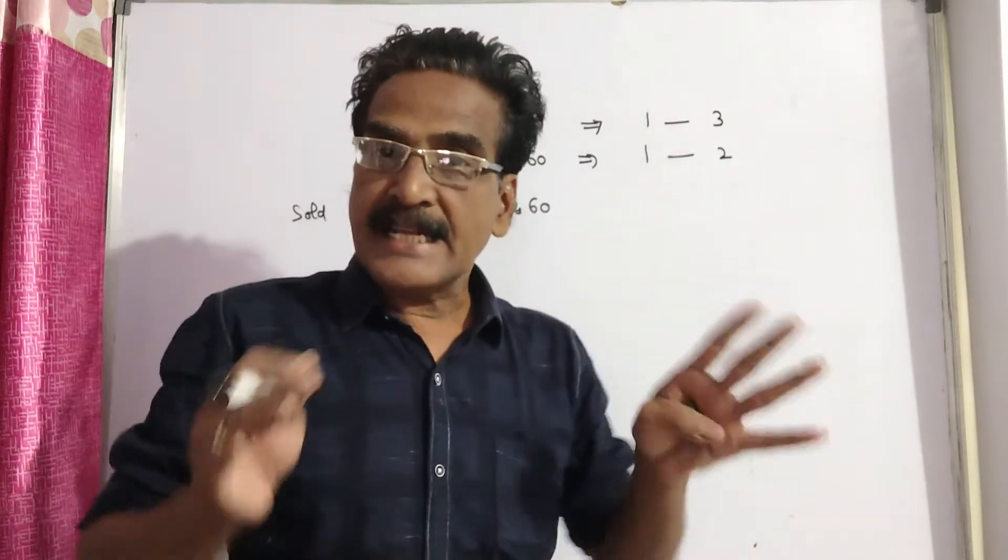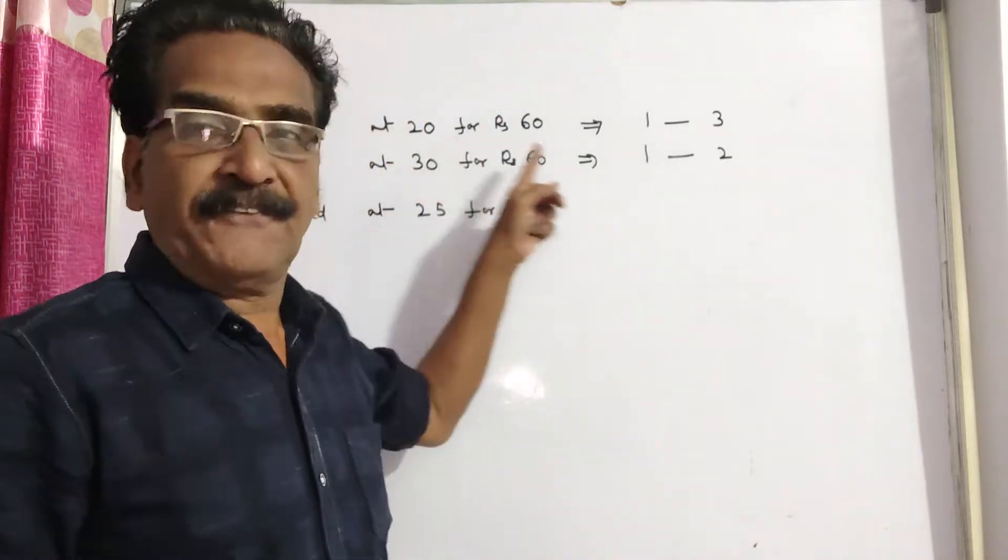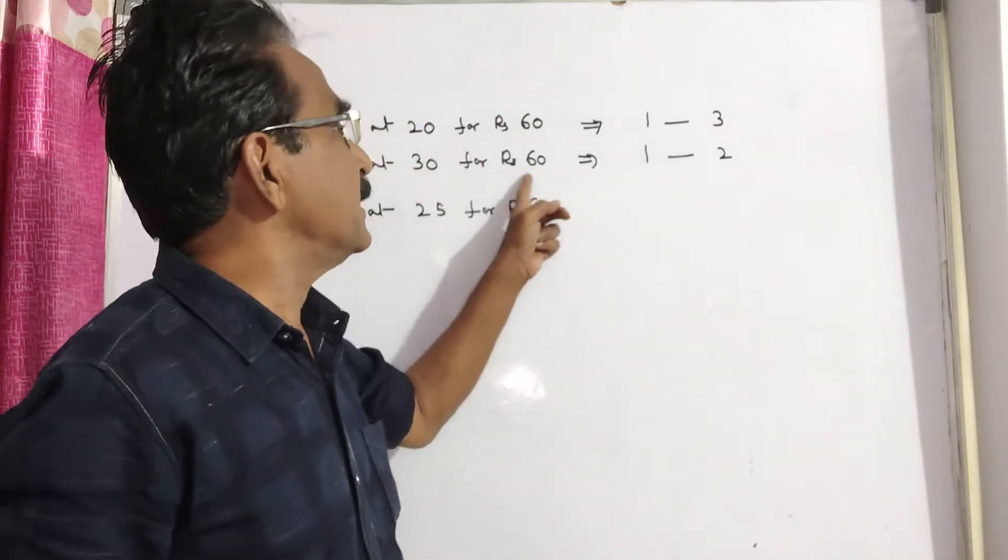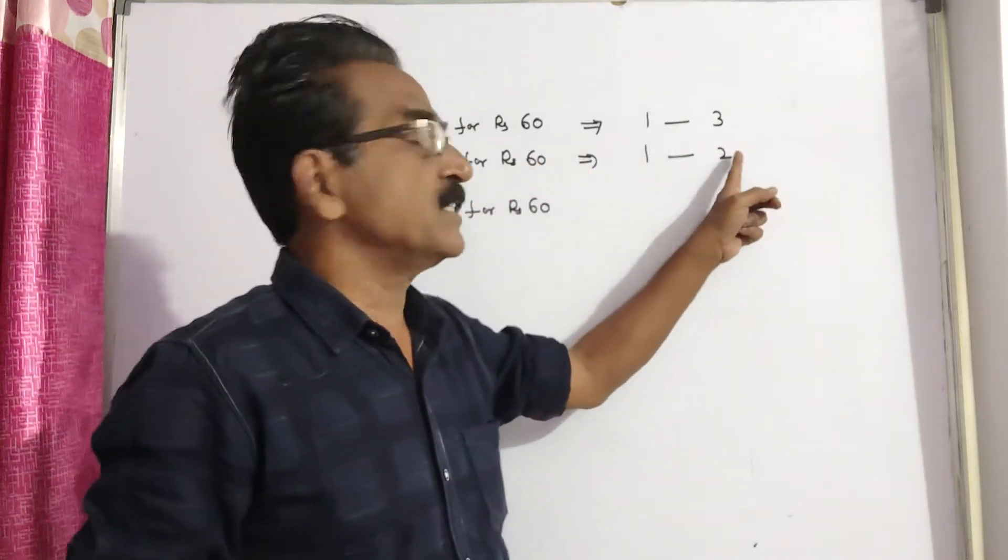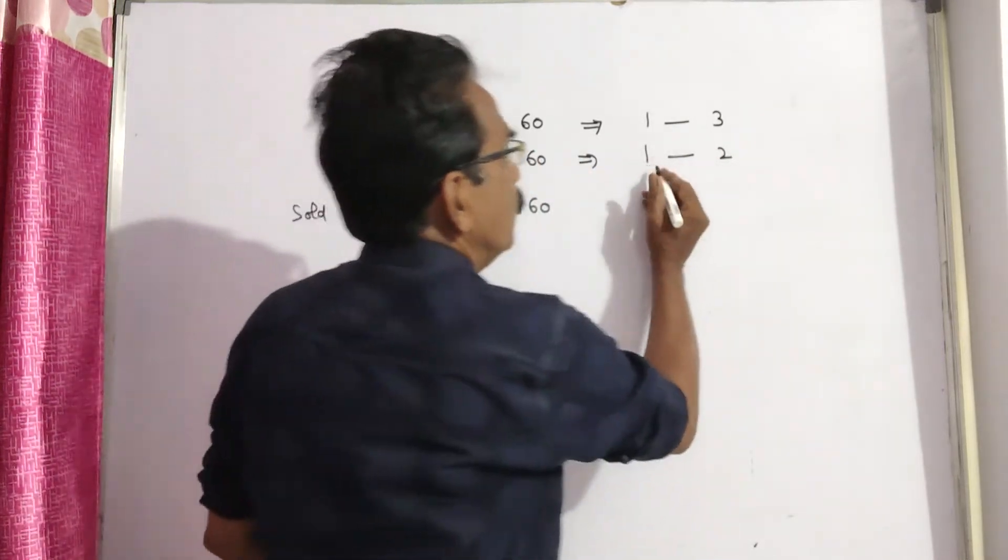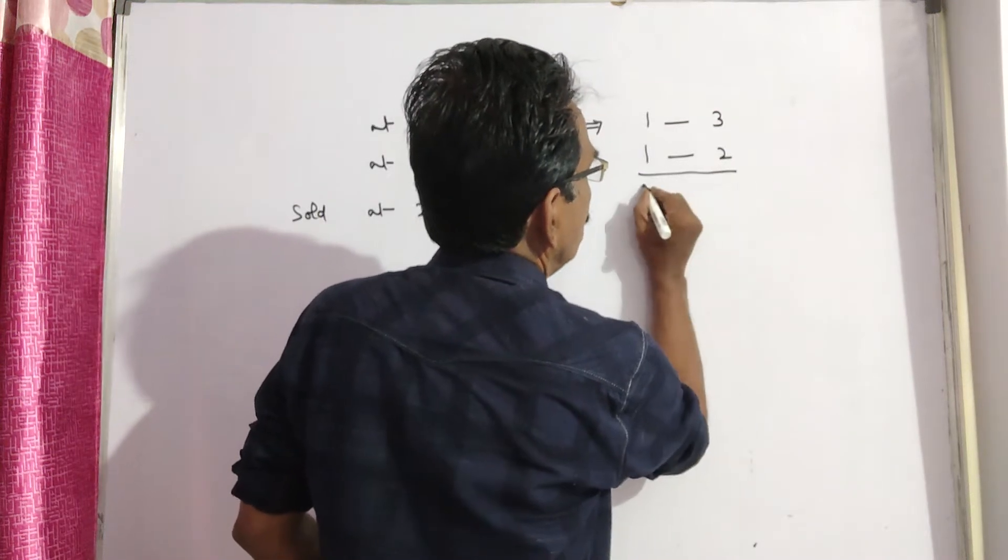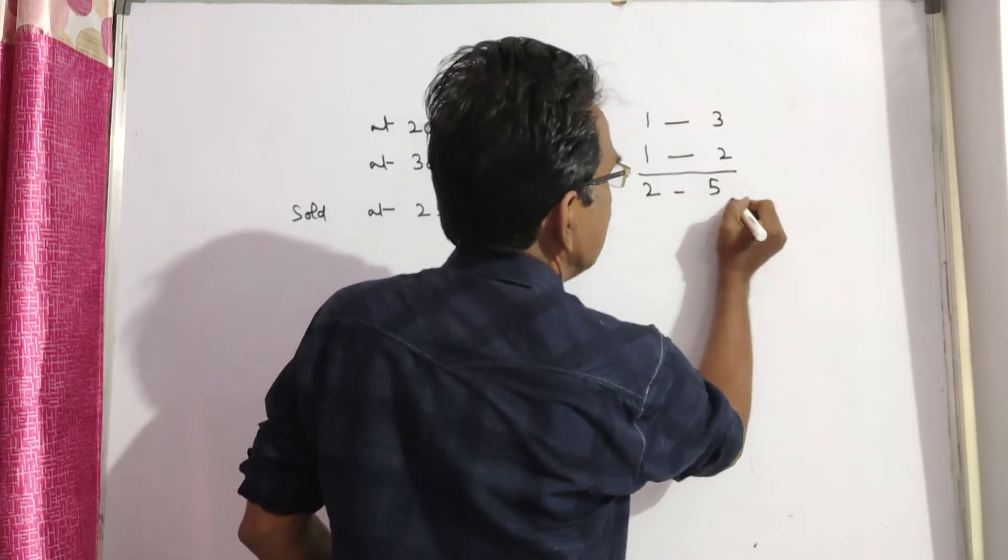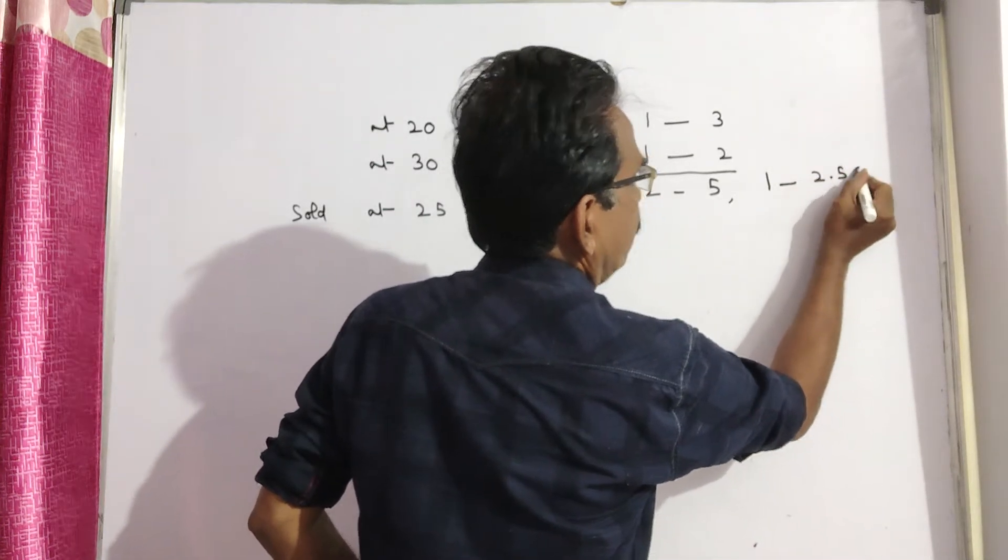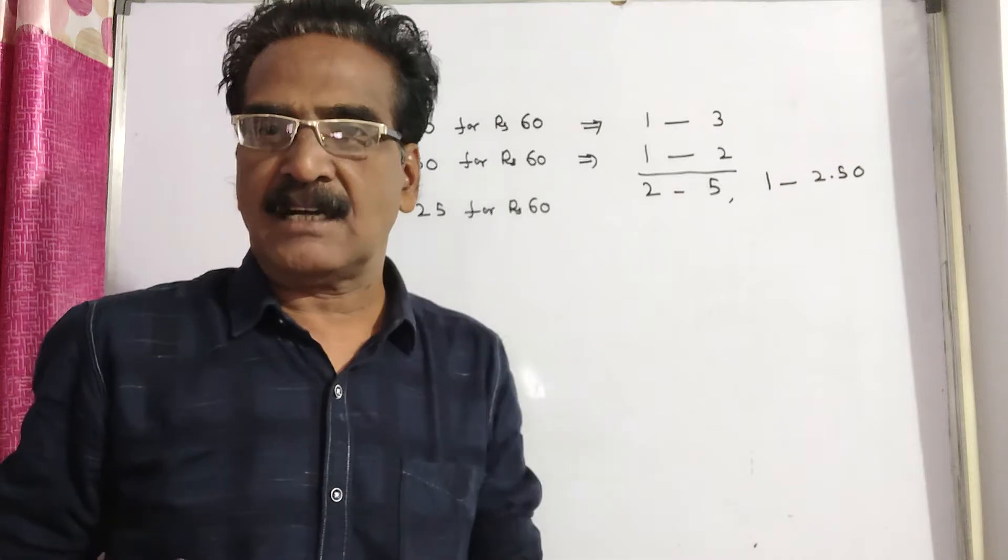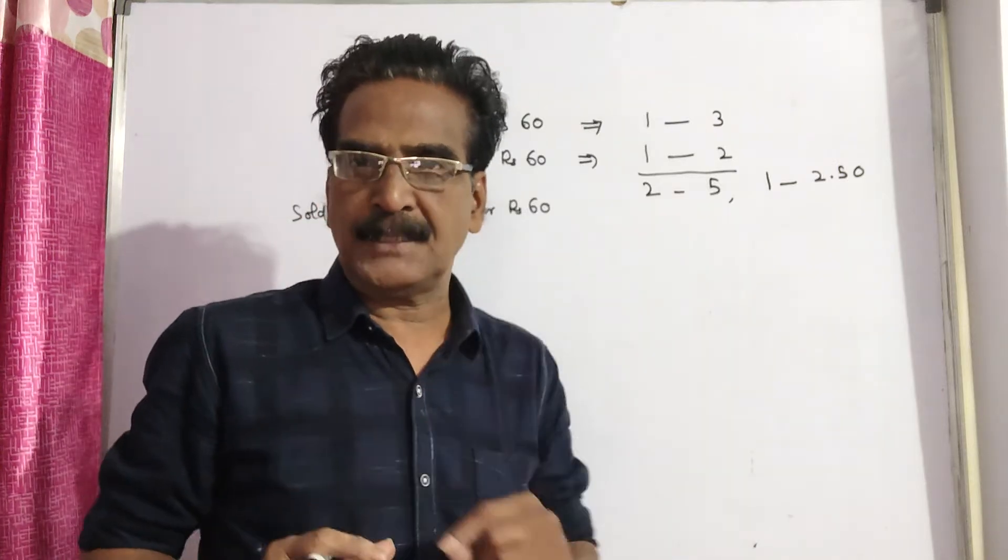And an equal number of oranges at 30 for Rs. 60. That means the cost of each orange is 60 divided by 30, which equals Rs. 2. So total cost of two oranges is Rs. 5, and average cost of one orange is 5 divided by 2, that equals Rs. 2.50. This is the average cost of each orange, Rs. 2.50.